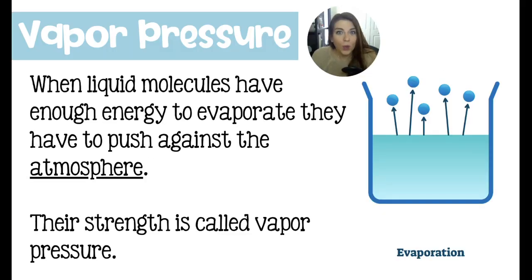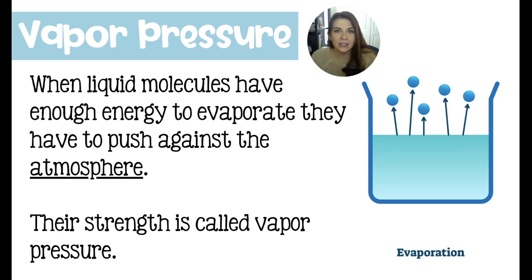Particles do not have to boil in order to become a gas — they can just evaporate on their own. You may have had a glass of water on your bedside table and left it there for a few days. The water level can drop because the water is evaporating out of the glass. That is the concept of vapor pressure: stuff will just evaporate on its own. Some substances will have that evaporation happen more quickly than others, and that is a credit to the amount of vapor pressure that they have.